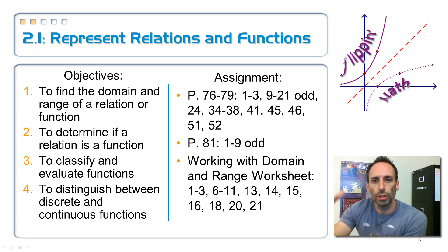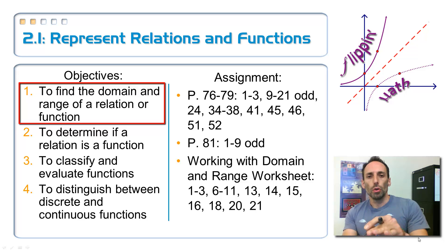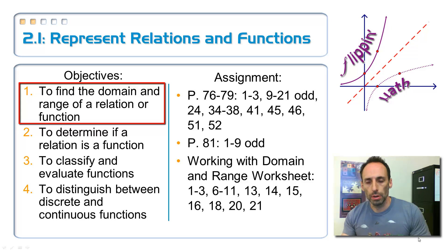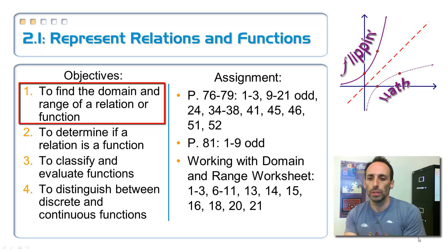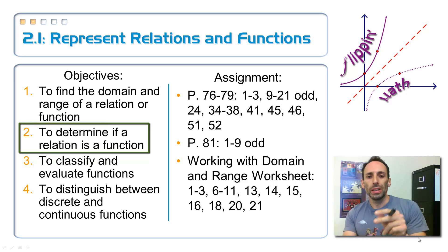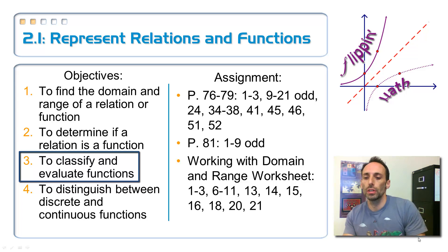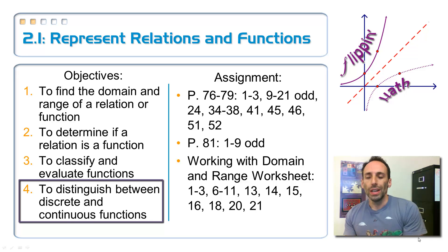We have four objectives in this lesson — a lot of foundational stuff. Number one: finding the domain and range of relations and functions — inputs and outputs, whether from a graph, equation, table, or whatever. Objective two: determining if a relation is a function or not. Number three: classifying and evaluating a function — what you put in, what you get out, what kind of function it is.